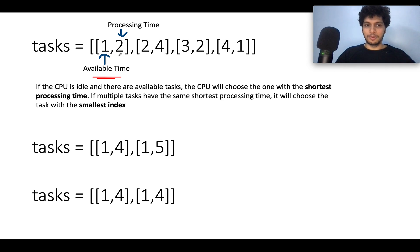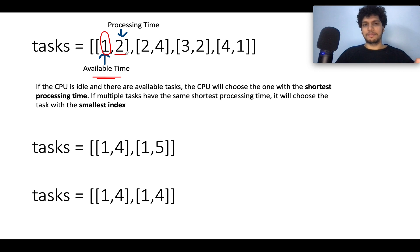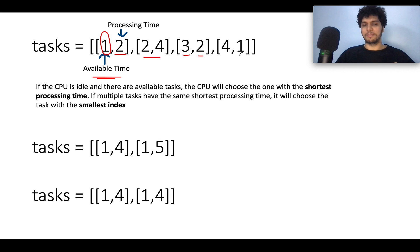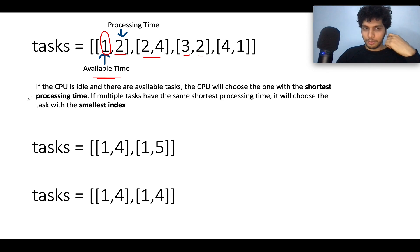For example: task 0 is available at the first instant and takes two units of time; task 1 is available at the second instant and takes four units; task 2 is available at the third instant and takes two units; task 3 is available at the fourth instant and takes one unit.